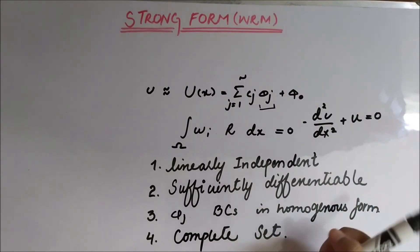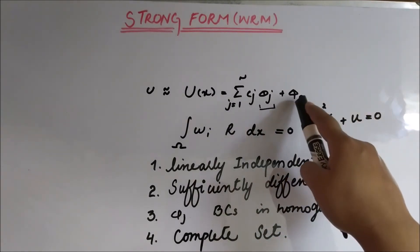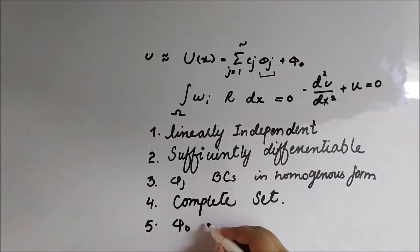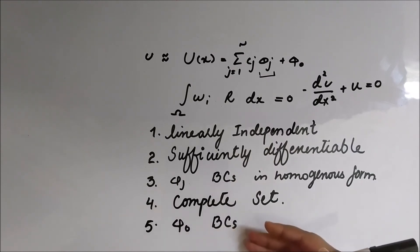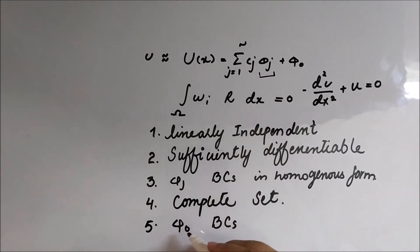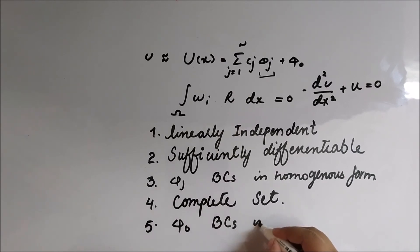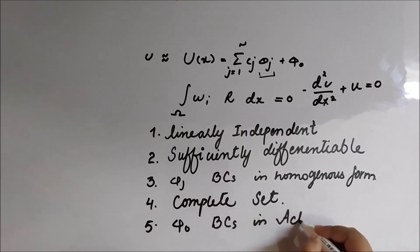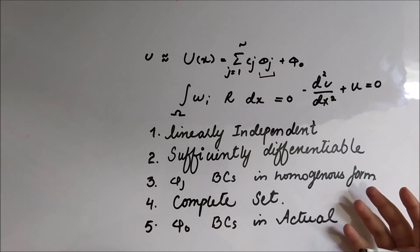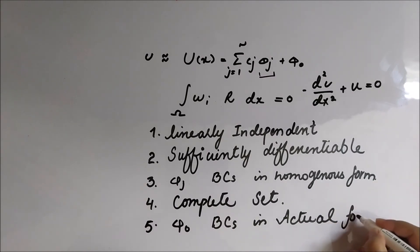The fifth condition is about phi_naught — phi_naught must satisfy the boundary conditions, meaning both essential and natural boundary conditions. But phi_naught should satisfy them in actual form, meaning according to the given boundary conditions stated in the problem.